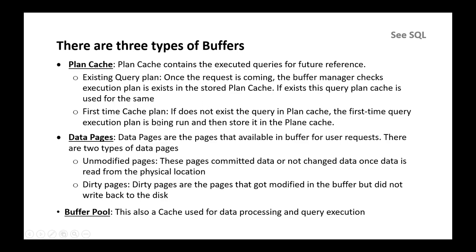Data pages are the pages available in the buffer for user requests, and there are two types: unmodified pages and dirty pages. Unmodified pages are committed or unchanged data — pages read from physical storage that have not been modified after the read. Dirty pages are pages that have been modified in the buffer but have not yet been written back to disk.